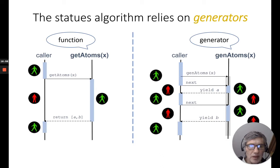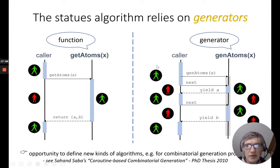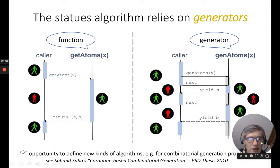So, after that, the generator can process a second yielded value and it continues like this. So, you may say this is a programming trick. It's a new way to implement the existing algorithm. Actually, I think it's far more than that. Generator is something, it's really a new way to see how a program can work. And it's an opportunity to define new kinds of algorithms, especially for combinatorial generation problems.